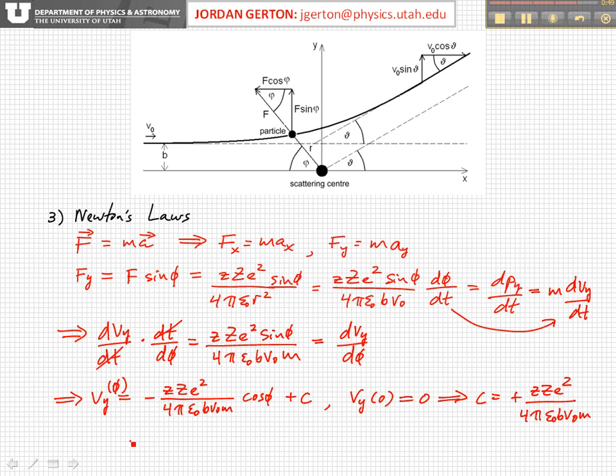So after all, we have that Vy, which is a function of φ, is equal to little z, big Z, e squared, divided by 4π ε₀ b v₀ m, times 1 minus cosine of φ. And this is true for φ less than or equal to π minus θ, and greater than or equal to 0, so φ will never be bigger than π minus θ.